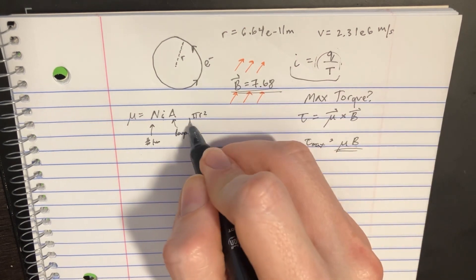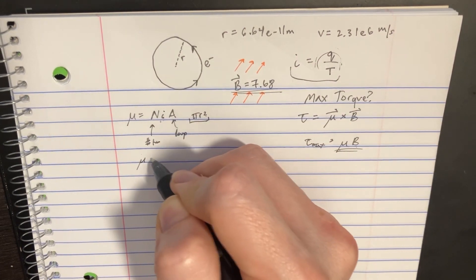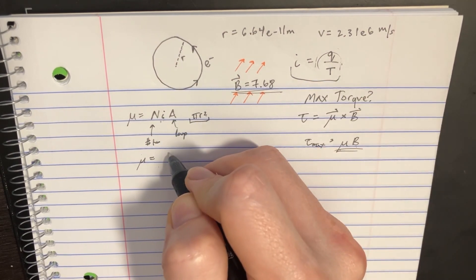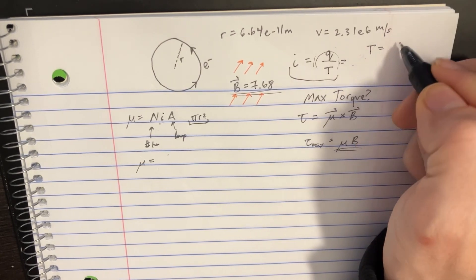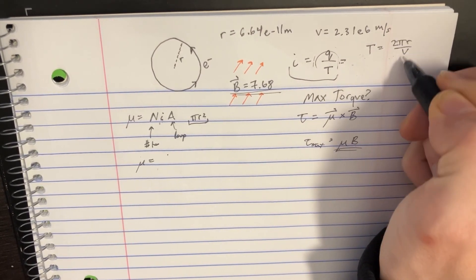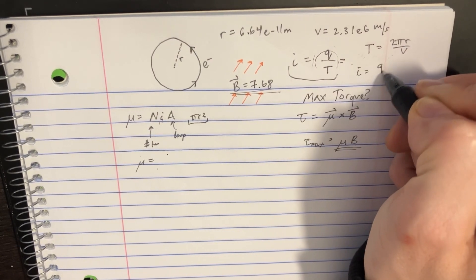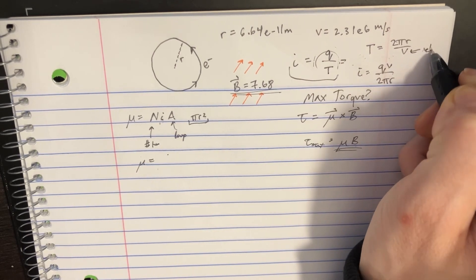We already know the radius. We have mu equals 1 times I, which is q over T. If T equals 2πr over v, then I equals qv divided by 2πr, where v is velocity.